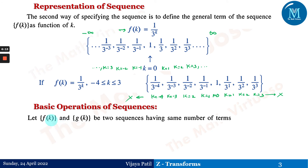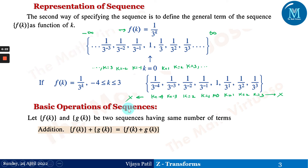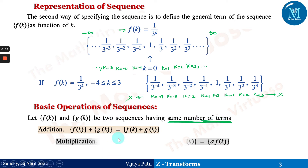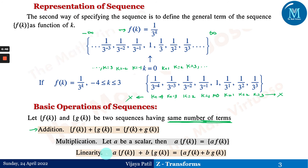Now there are some basic operations on sequences. Let f(k) and g(k) be two sequences. Addition works the same as adding corresponding numbers, but we should have the same number of terms in both sequences for the operation to be possible. Multiplication with a scalar a gives a·f(k), where a is multiplied into every term of the sequence. The linearity property states that a·f(k) + b·g(k) is obtained by multiplying a with each term of f(k), b with each term of g(k), and adding them.